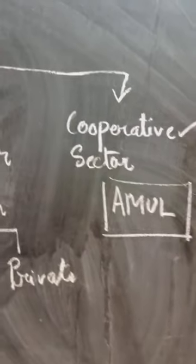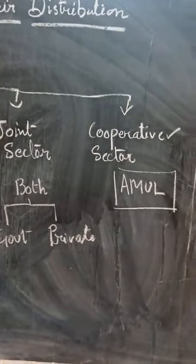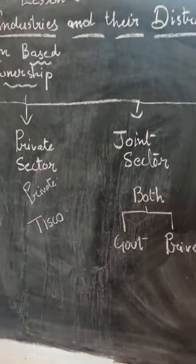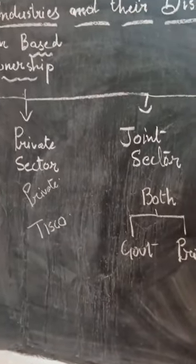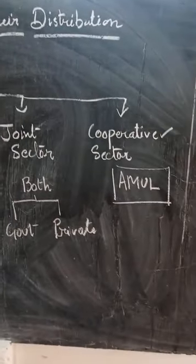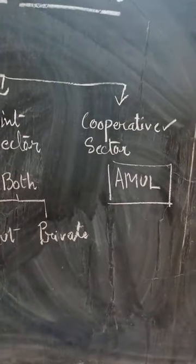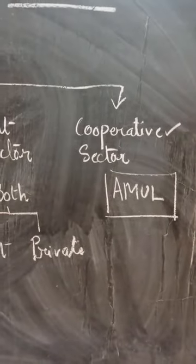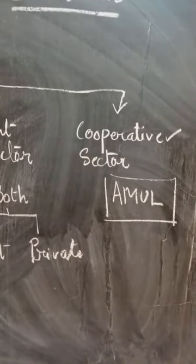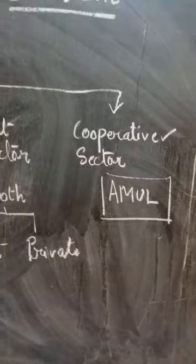We can say that without workers, such industries cannot be run. Whereas in the joint and private sector, they have big machines to run such industries. But in sectors like the cooperative sector, the workers play an important role. That is, who supplies the milk and who produces the milk — both are important.